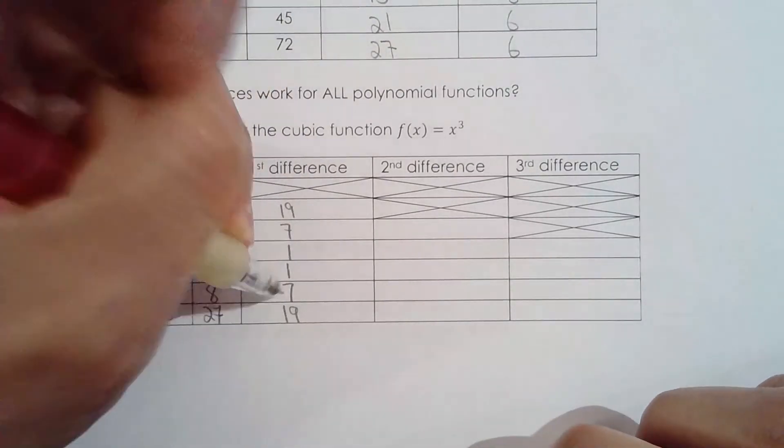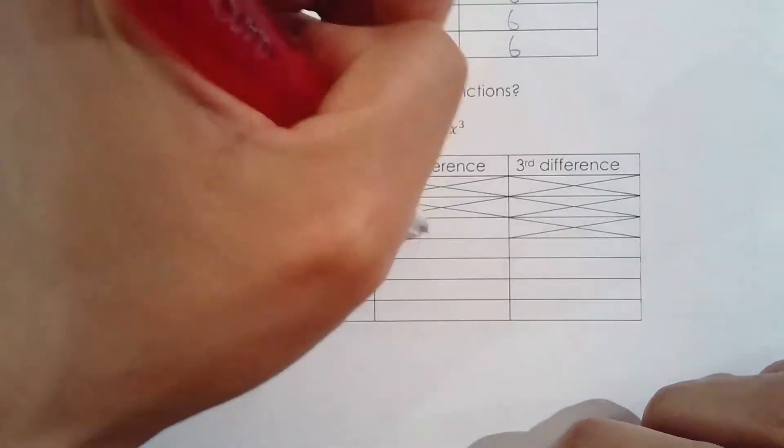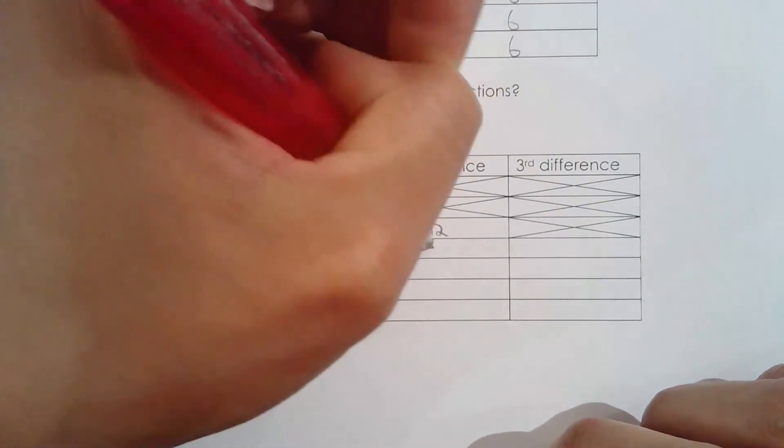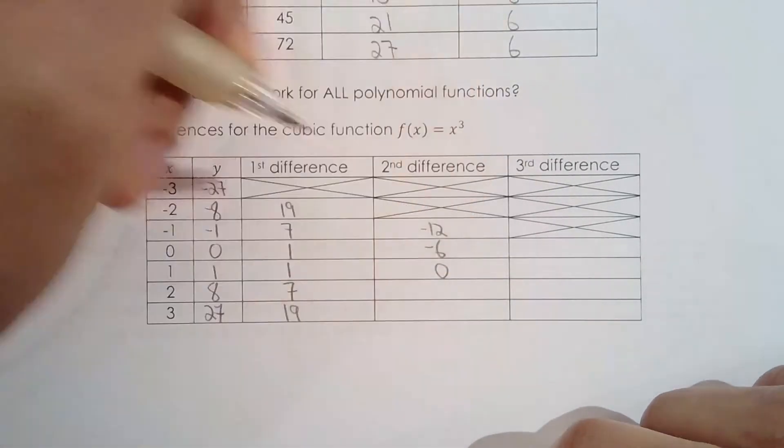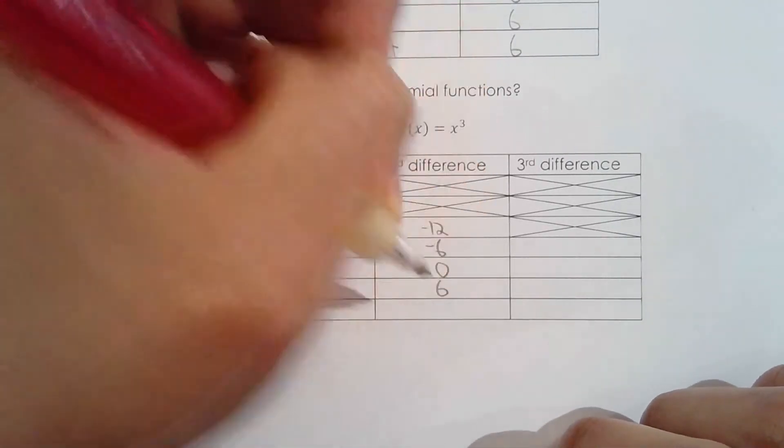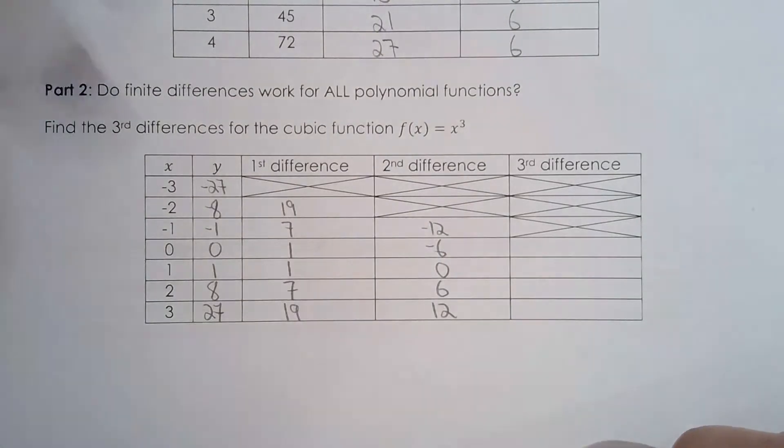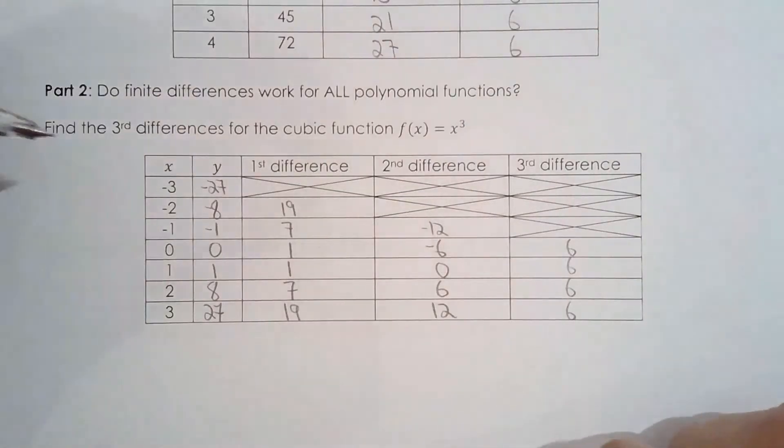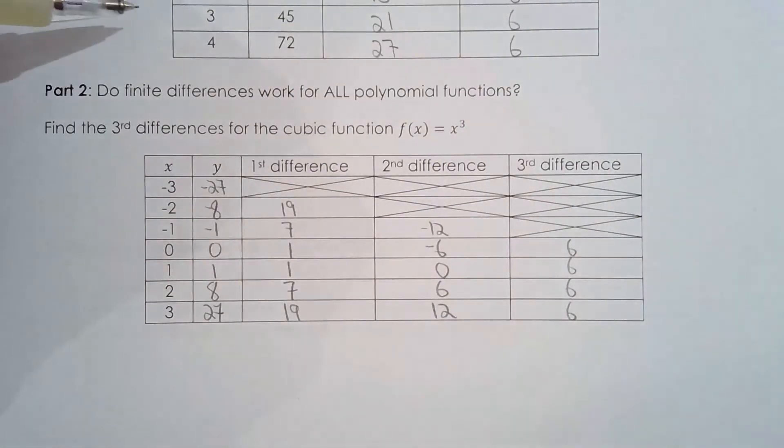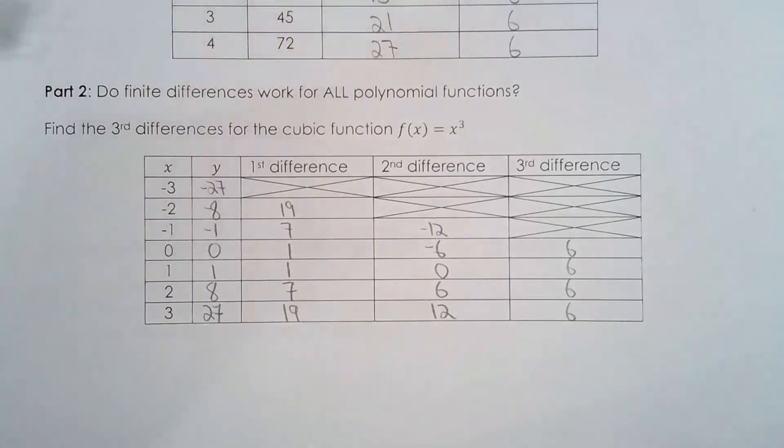Now is it quadratic? Let's see. Negative 12, negative 6, 0, no change, 1 to 1, 1 to 7 is 6, 7 to 19 is 12. It's not quadratic. So this is up 6, 6, 6, 6. What do you know? The third difference is a constant. And I already know that this was cubic.